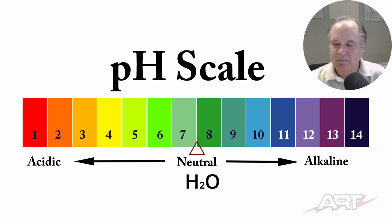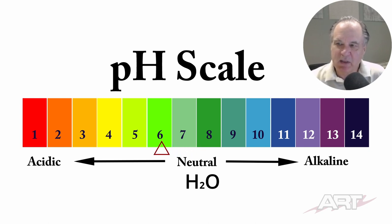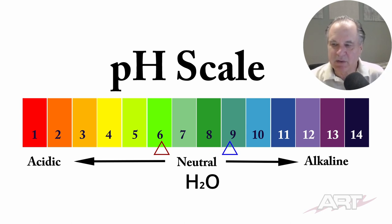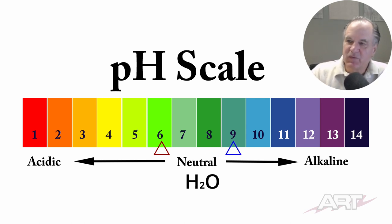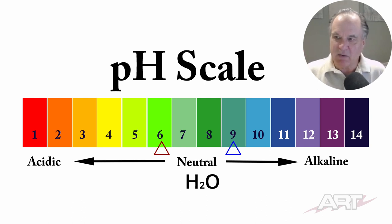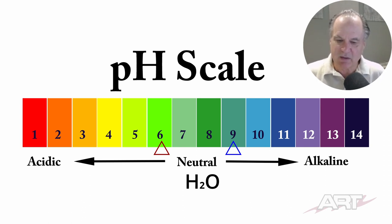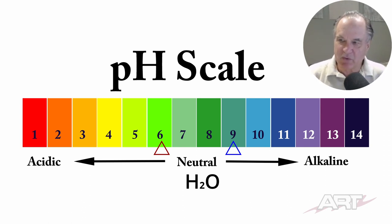Our contaminants are going to be slightly acidic, around 6 on the scale. Whereas our alkaline cleaner — our degreaser — is going to be perhaps around 9. The objective here is for the degreaser to break down or neutralize the contaminants, and that will help us extract the contaminants from the surface.